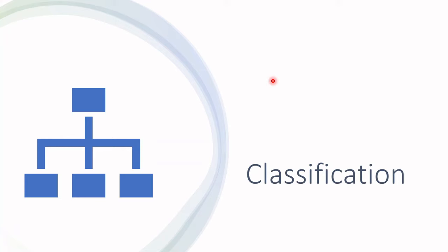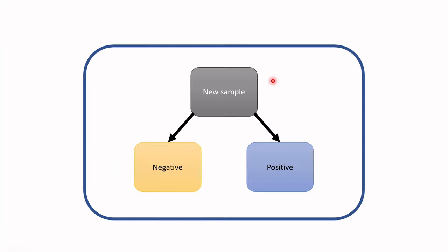Now suppose we want to train some sort of classification model that will help us predict whether someone has a certain disease or does not. If someone has a disease we refer to that as a positive sample, and if someone doesn't have the disease then we refer to that as a negative sample. When we have this classification model and a new sample arrives, the model should predict whether it's positive or negative. When we look at the outcome compared to the real world, we can divide these outcomes into four different groups.